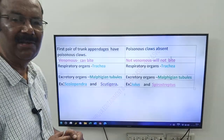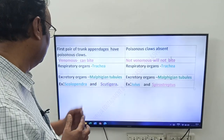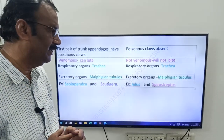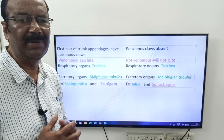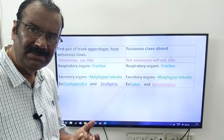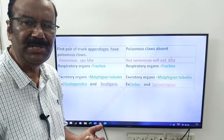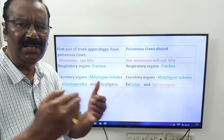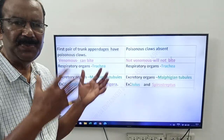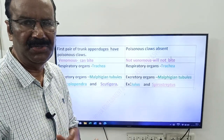There are three common characters in both centipedes and millipedes: both are terrestrial; both have trachea as their respiratory organs; and both have Malpighian tubules as their excretory organs.